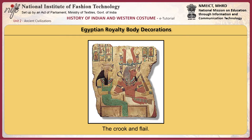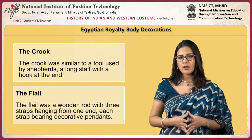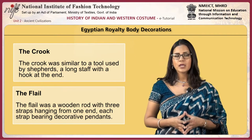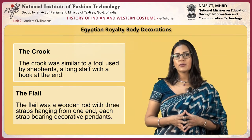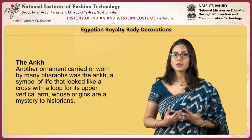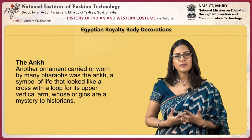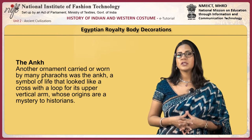The ruling pharaohs, kings and queens wore special ornaments filled with symbolism. Nearly every Egyptian pharaoh carried the crook and flail — symbols of the rule of the king. The crook was similar to a tool used by shepherds, a long staff with a hook at the end. The flail was a wooden rod with three straps hanging from one end, each strap bearing a decorative pendant. Another ornament carried or worn by many pharaohs was the ankh, a symbol of life that looked like a cross with a loop for its upper vertical arm, whose origins are a mystery to historians.